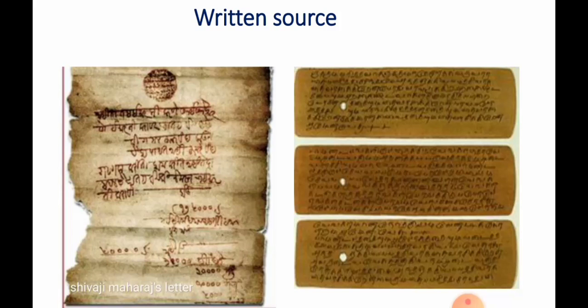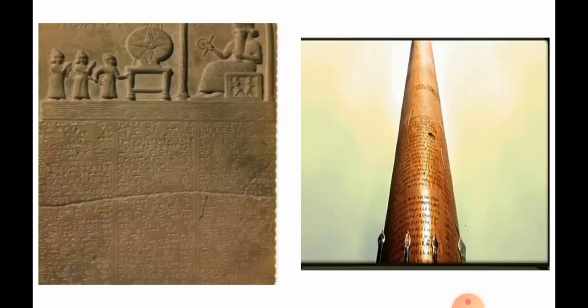Written sources are the inscriptions on stone, on the papyrus sheet, and letters written by Shivaji Maharaj. We also have inscriptions on stones or monuments. All these are included in written sources.